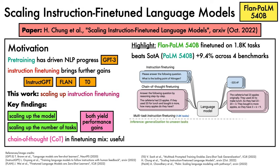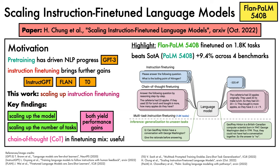The model is then evaluated on its ability to generalise to unseen tasks, formulated as prompts. For example, the task could be a question: "Can Geoffrey Hinton have a conversation with George Washington? Give the rationale before answering." An appropriate answer would be: Geoffrey Hinton is a British-Canadian computer scientist born in 1947. George Washington died in 1799. Thus, they could not have had a conversation together. So the answer is no.